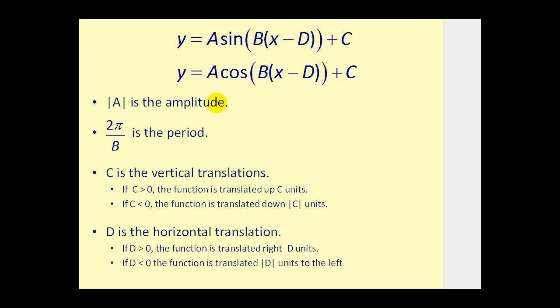The absolute value of A is the amplitude, and 2π divided by B is the period. C is the vertical translation — if C is positive, it's translated up C units; if C is negative, the function is translated down C units. D is the horizontal translation. If D is greater than zero, we have x minus D, and the function is translated right. If D is less than zero, or if we have plus D, it's translated D units to the left.